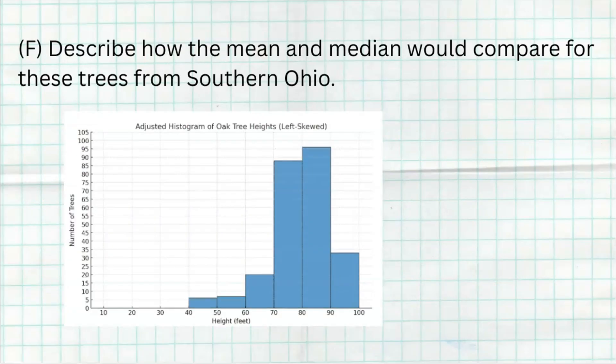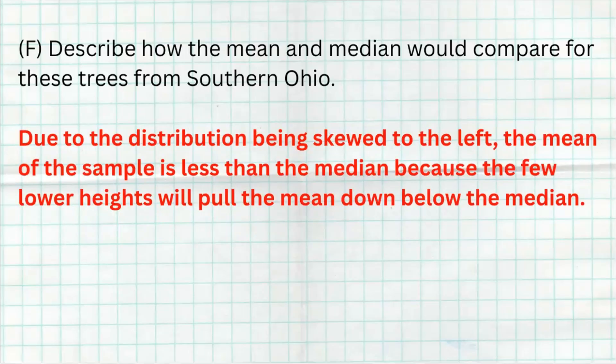The next question says to describe how the mean and the median will compare for the trees in southern Ohio. Once again, we're going to comment on the fact that it's skewed left. When you're skewed left, the mean is going to go to the left. It's going to be lower than the median because those small trees that are between 40 and 50, they're definitely going to affect the mean. They're smaller, they're going to pull the mean down a little bit. Probably not going to be drastically lower than what that median is, but it's definitely going to be a little bit lower. Due to the distribution being skewed to the left, the mean of the sample is less than the median because the few lower heights will pull the mean down below the median.